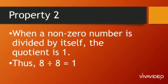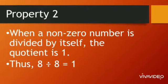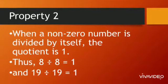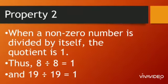when 8 is divided by 8, we get 1 as the quotient and 19 divided by 19, again we get 1 as the quotient.